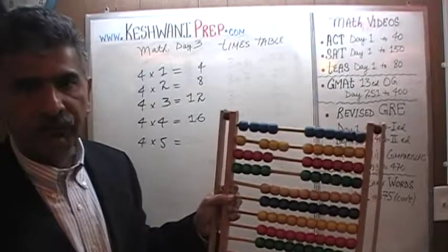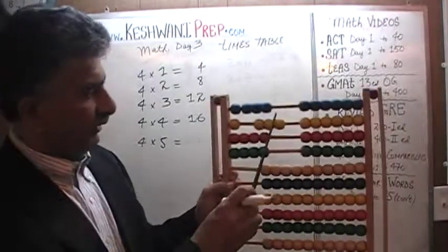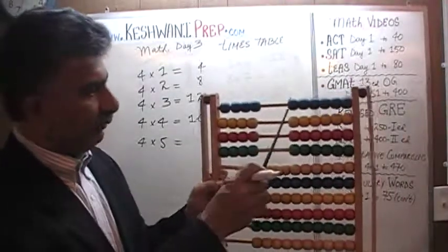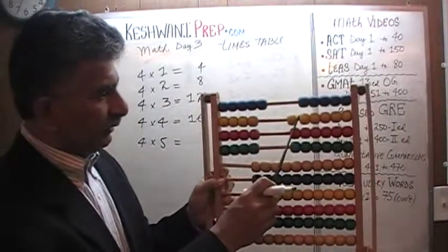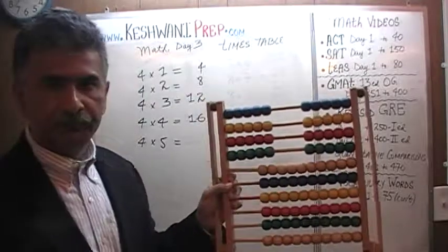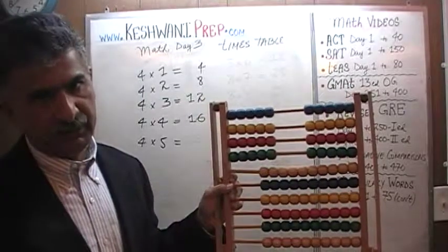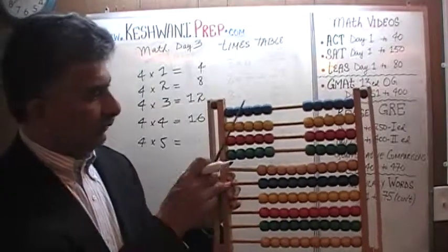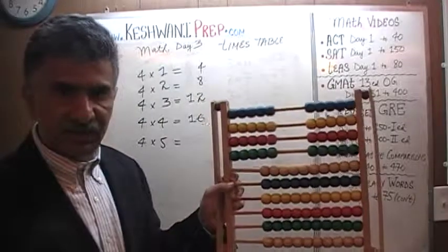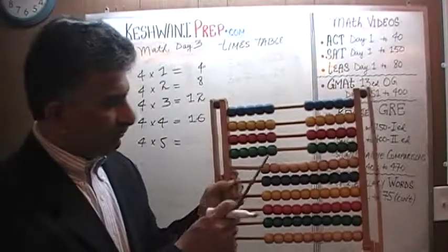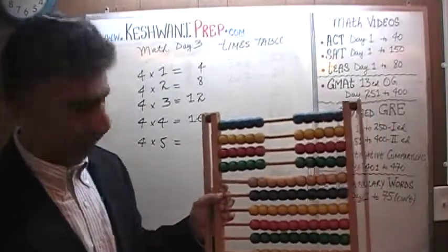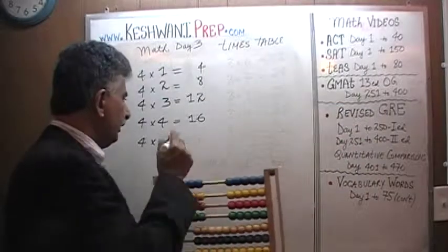What about four fives? We already have four fours — let's add one to everybody, so now we have a group of fives. Fives are very easy to count: five plus five is ten, ten plus five is fifteen, and fifteen plus five is twenty. So four fives are going to be twenty.